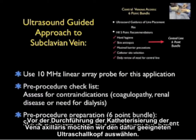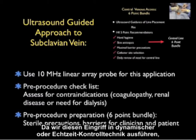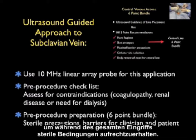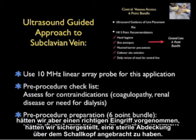Before performing axillary vein cannulation, select the right ultrasound probe. For this application we use a higher frequency 10 megahertz linear array probe. Because we're performing this procedure using a dynamic or real-time guidance technique, a sterile sheath or barrier must be placed over the probe to maintain sterile precautions throughout the procedure. Note that in some upcoming images the probe lacks a sterile sheath, but in a real procedure that sheath is essential.